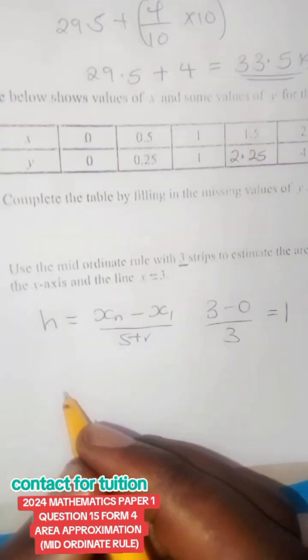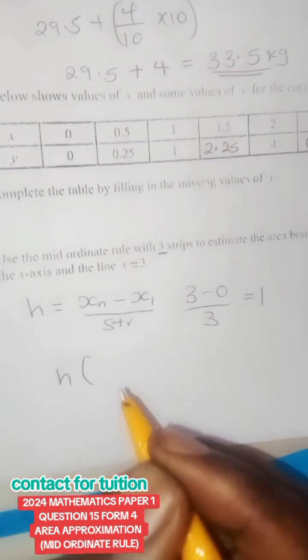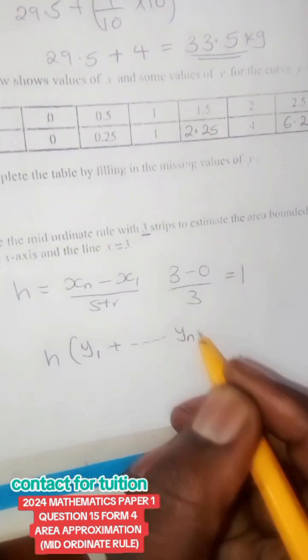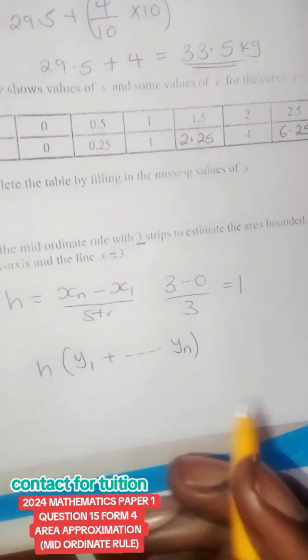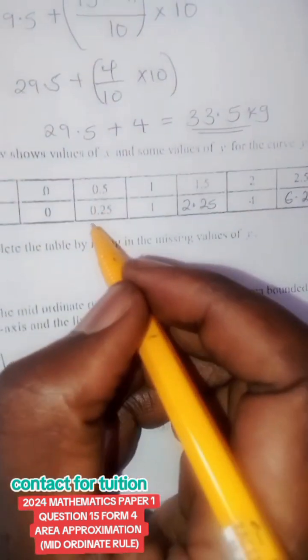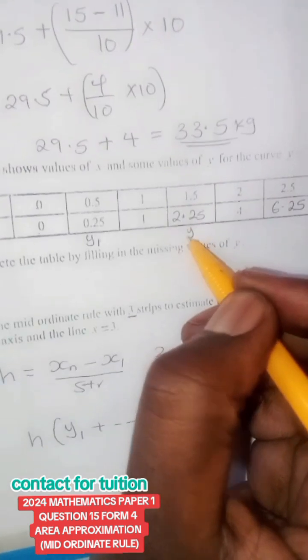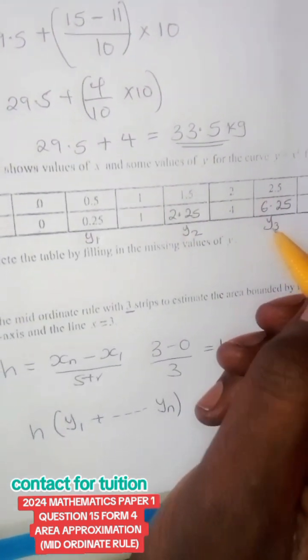The formula for the mid-ordinate rule states that h into y1, every digit that is in the y values up to the last digit that are in the middle. Therefore, in this case, our y1 will be here because you skip the first one and take the second one. This one is y2, and we have our last digit as y3.